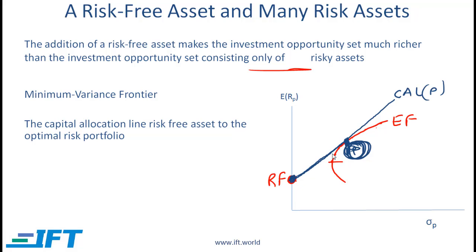Points on the capital allocation line represent different weightings between the risk-free asset and portfolio P. Here the investor has 100% in the risk-free asset; here he has 100% in P. At the midpoint he would be 50% in the risk-free asset and 50% in P. Here he would be 75% in P and 25% in the risk-free asset. As we move along this line we simply have a difference in weightings.